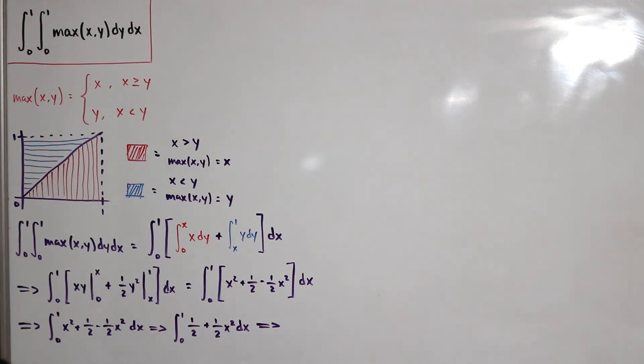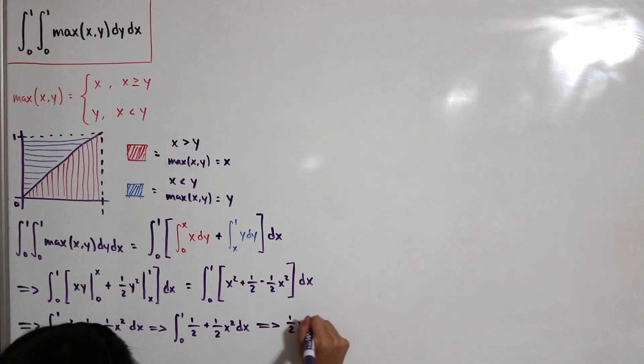Simply, this is just one half x. Then plus three divided by that, so it's plus one over six x cubed, and evaluate this from zero to one.